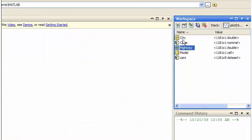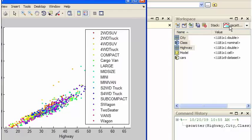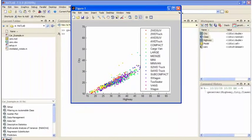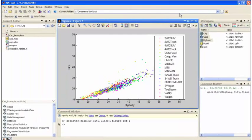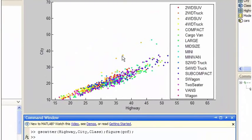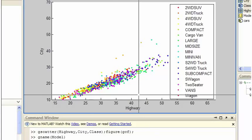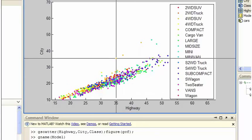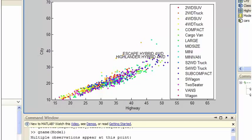You can easily visualize relationships between variables, like city and highway mileage in various car models shown here. Outliers quickly stand out, such as these cars with higher city mileage than the trend. Interactive graphics techniques like data labeling quickly explain the outliers. In this case, the outliers are hybrid vehicles.